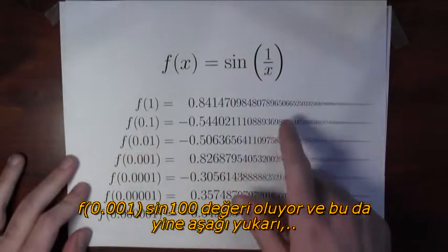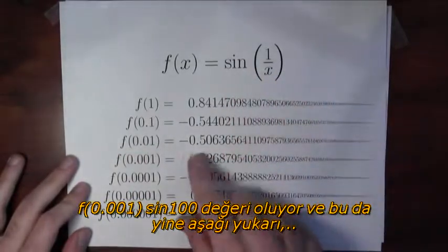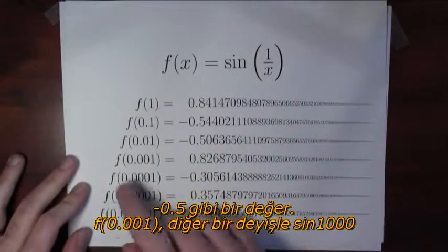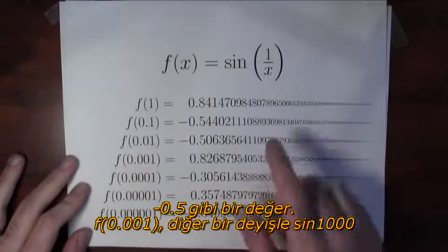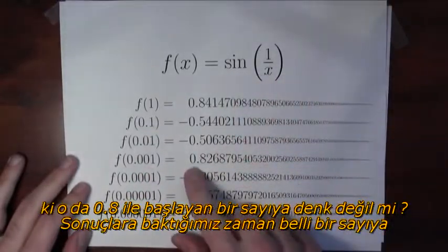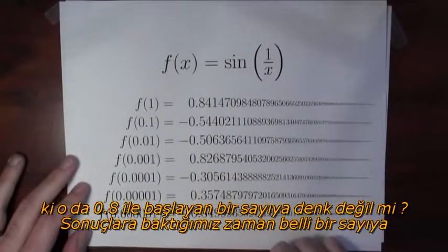f(0.01), which is really sin(100), is also about negative 0.5. f(0.001), which is like sin(1000), well that's 0.8 and some more, right?